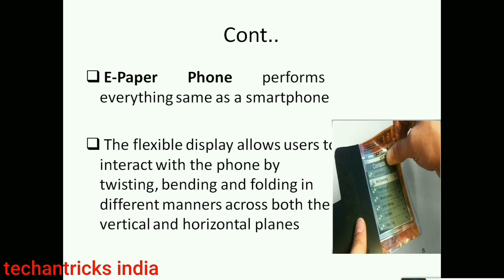E-paper phones perform everything just like a smartphone. The flexible display allows users to interact with the phone by twisting, bending, or folding, and they can perform different actions — for example, fold the upper corner of the phone to open contacts.